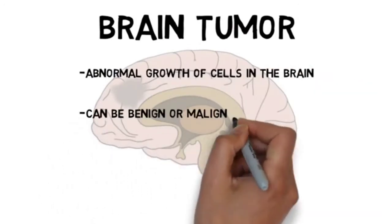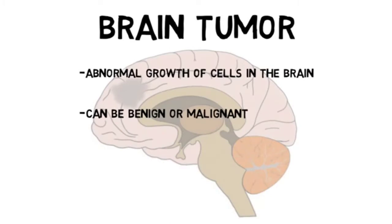Malignant tumors grow much more rapidly than benign tumors and frequently spread into surrounding brain tissue, whereas benign tumors tend to grow slowly and do not typically spread. Only malignant tumors are considered cancerous, but a benign brain tumor can still be problematic as its growth can impact neighboring brain tissue.